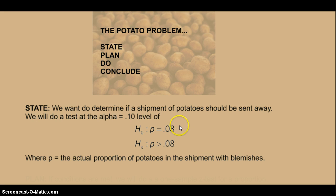We have a null and an alternate hypothesis here. Our null hypothesis is that the proportion of potatoes is 8%. Our suspicion might be that it's actually greater than 8%, or this is what we're trying to prove. And since p is being used here as a parameter in the problem, we have to very carefully and specifically define what p stands for. p is the actual proportion of potatoes in the shipment with blemishes.